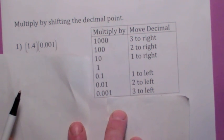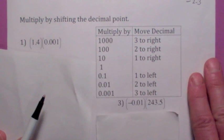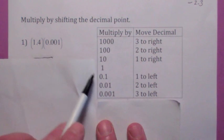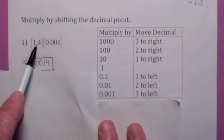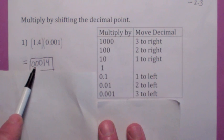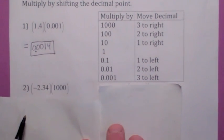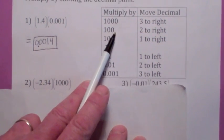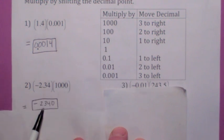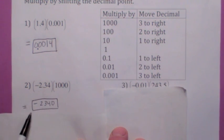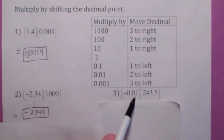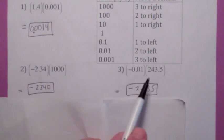So if you recognize this pattern, multiplying by powers of 10 becomes really simple. For example: 1.4 times 0.001 — this is going to make it smaller, so move the decimal 3 to the left. 1, 2, 3. When you multiply by 1,000, that's going to make it bigger — move the decimal 3 to the right. So take the decimal at 2.34, move it 3 to the right, and you get negative 2,340. For 243.5 times negative 0.01 — not only does it make it negative, but you also move the decimal 2 places to the left.